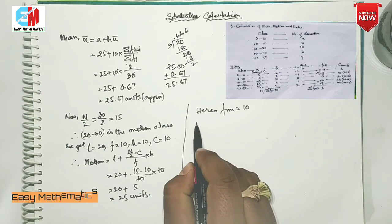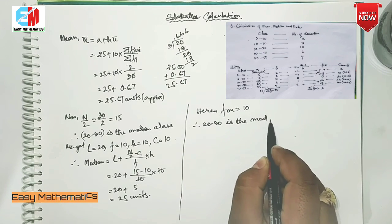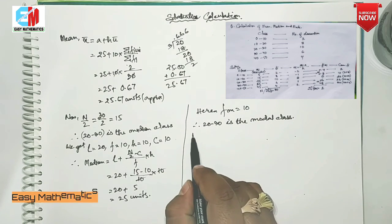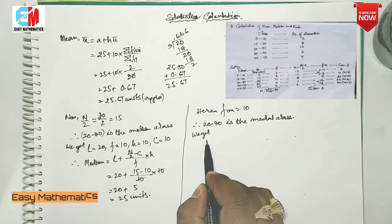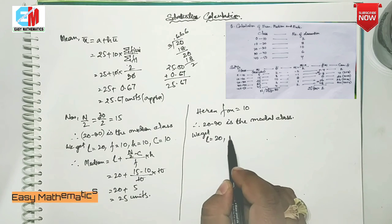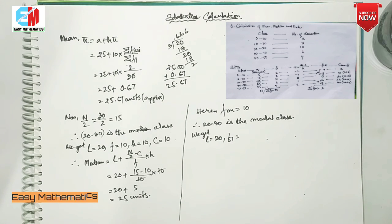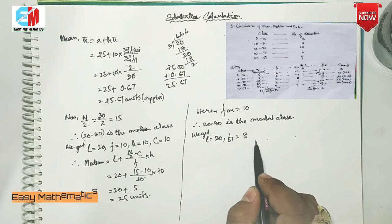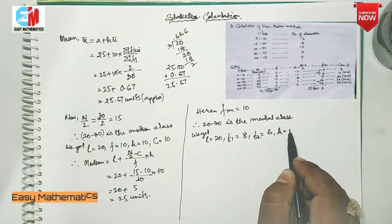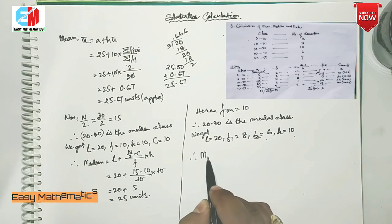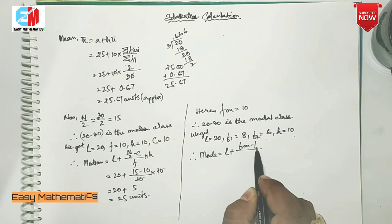So if you want to see the class, you'll see the modal class. The formula for the modal class uses F1 — just above the maximum frequency — and F1 just below in the class, and F2.